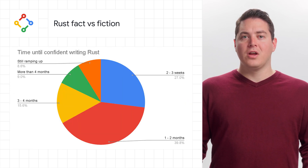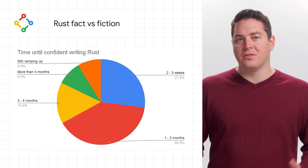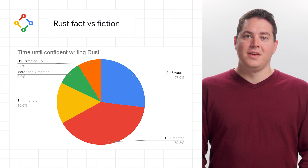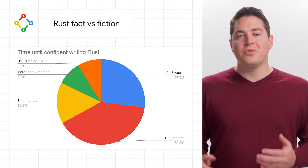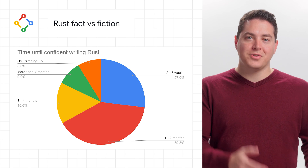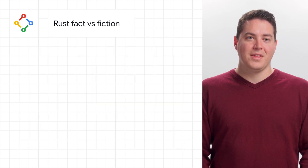Rumor number one: Rust takes more than six months to learn — which is debunked. Based on our studies, more than two-thirds of respondents are confident in contributing to a Rust codebase within two months.